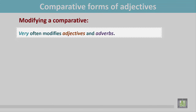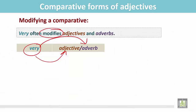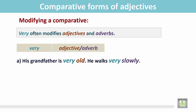Very often modifies adjectives and adverbs. Very is placed before the adjective or adverb and it modifies them. For example: His grandfather is very old — here, very modifies the adjective old. He walks very slowly — here, very modifies the adverb slowly.